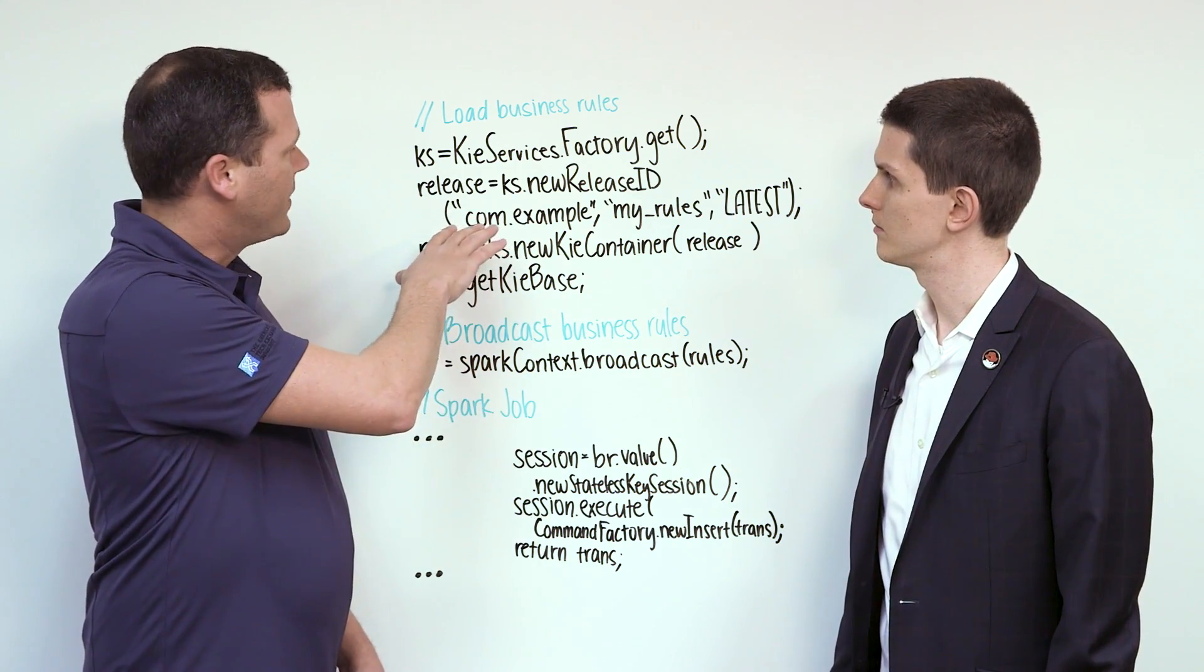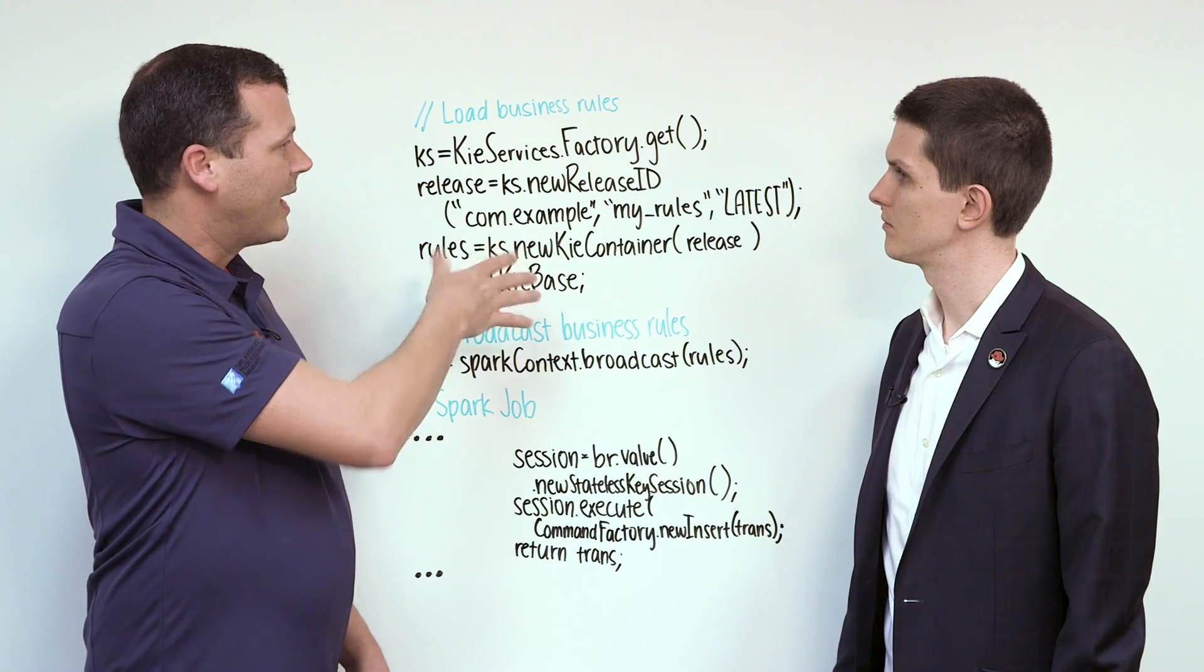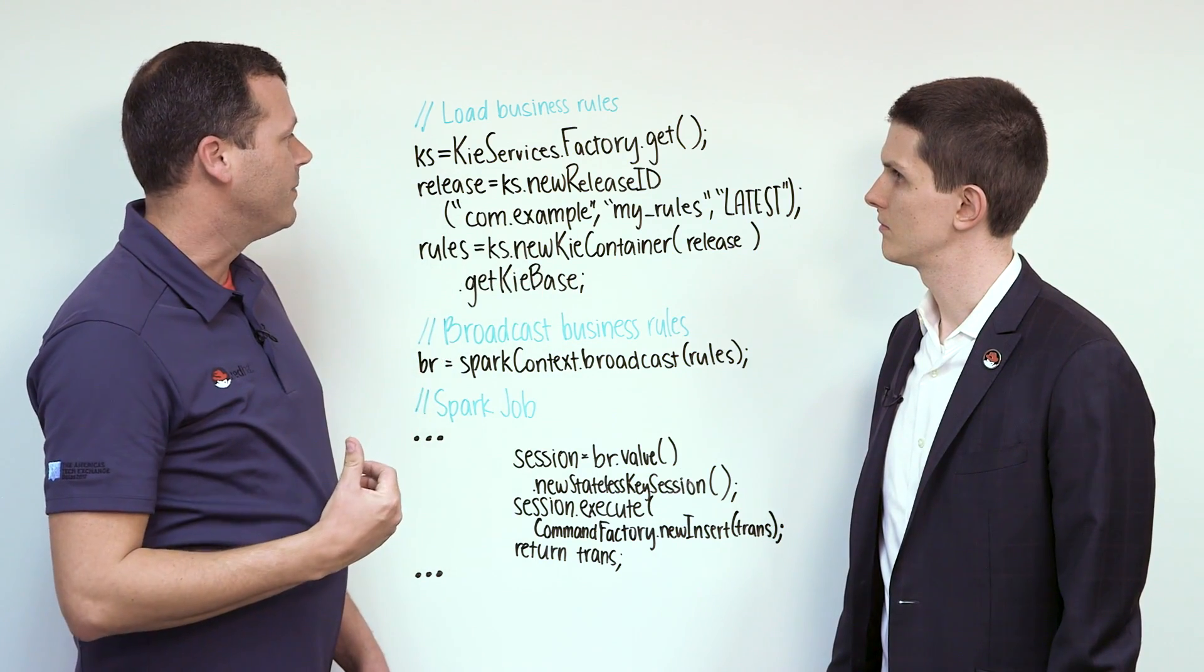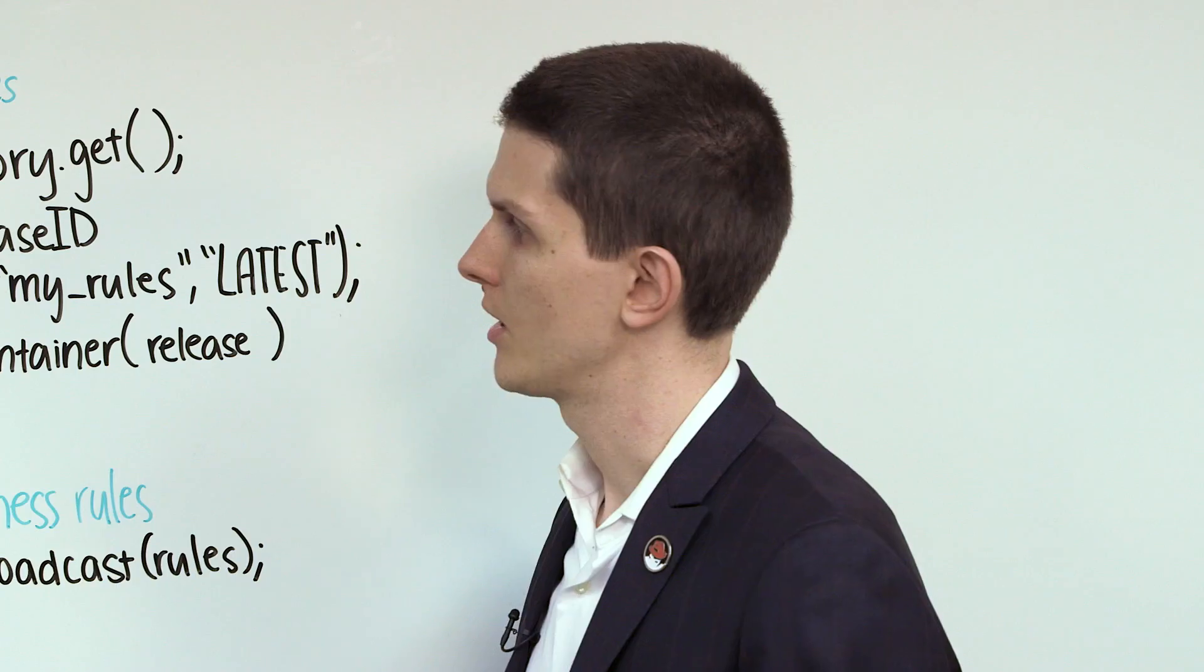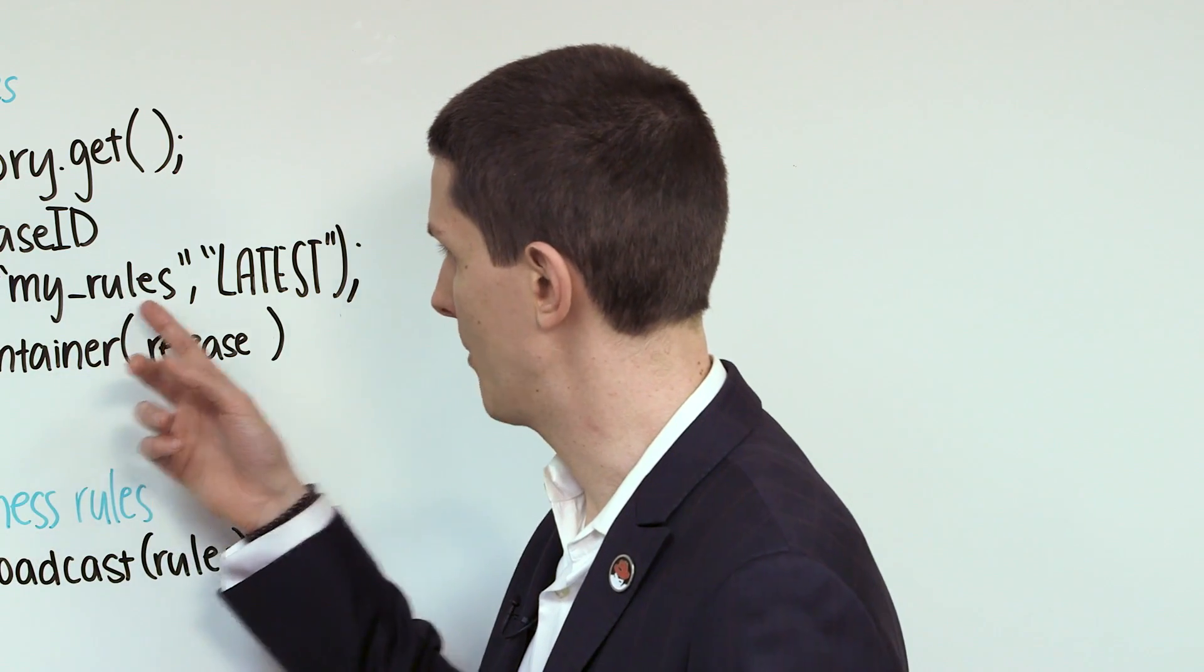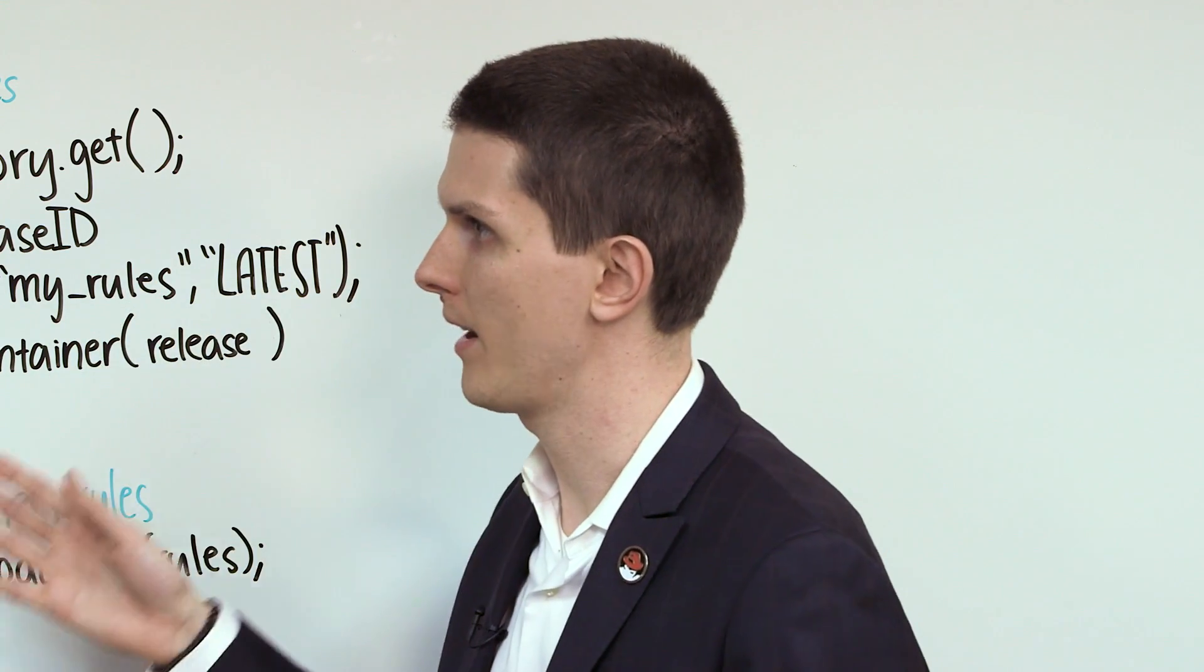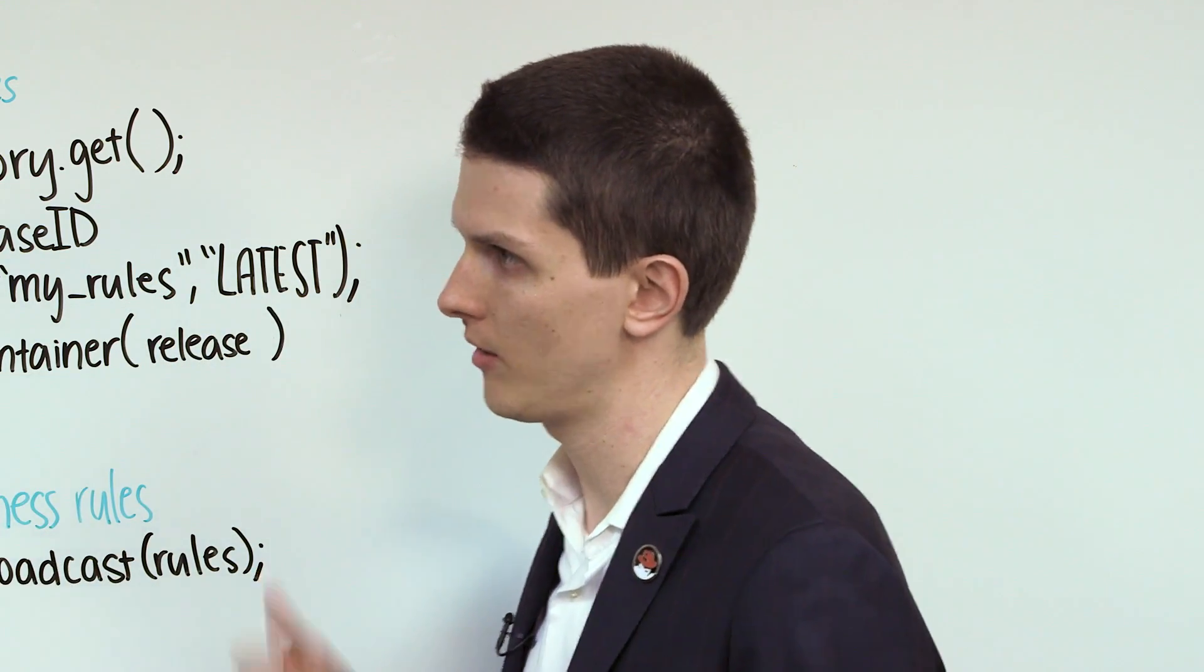The next line is where we set up the release ID with the GAV from the jar that we just created. So this is the group and the artifact name and the version that we all defined when the administrator pushed out those rules in the earlier example? Right.